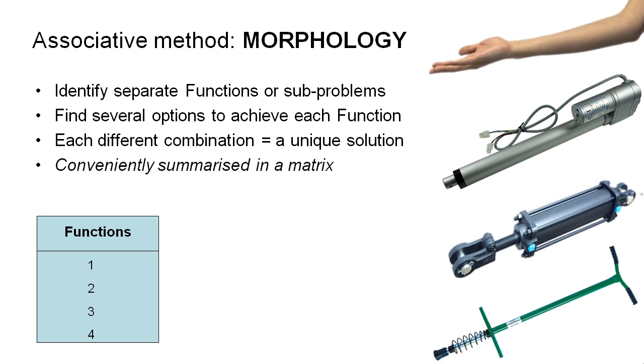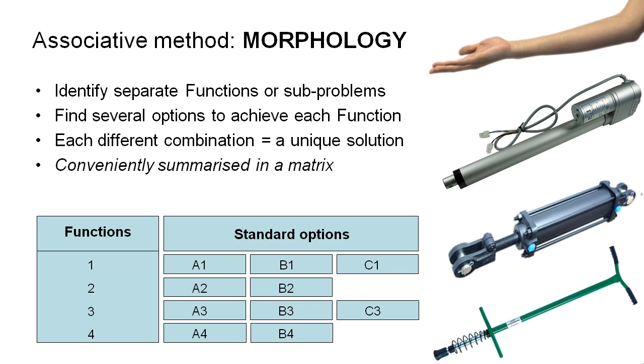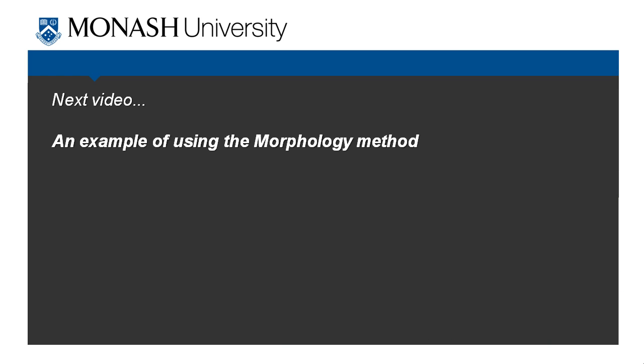So if we take our functions which we've generated from our OFFAS analysis and we list them down the table 1, 2, 3, 4, we can then work across the table and list some standard options to achieve these functions. So perhaps for function 1 we come up with the options A1, B1, and C1. For option 2 maybe we can think of two different options A2 and B2. For function 3 we've got A3, B3, and C3. And for function 4, A4 and B4. So all in all, if we were able to use all of these options in combination with all of the other options, then we'd have a total of 3 times 2 times 3 times 2 possible solutions. So 36 solutions coming out of this table. Thanks for watching. In the next video we're going to look at an example of using the morphology method.